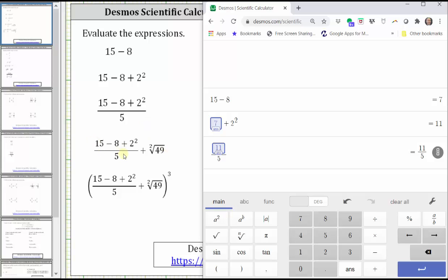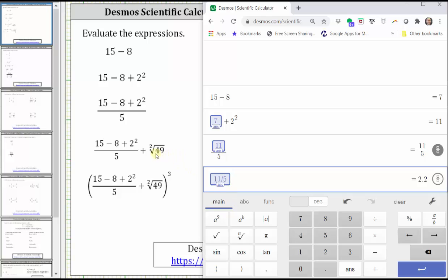Notice the fourth expression is equal to the third expression plus the square root of 49, which means to evaluate the fourth expression, we can click the answer key and then just add the square root of 49.